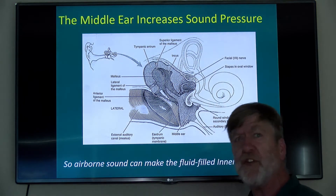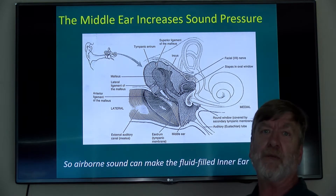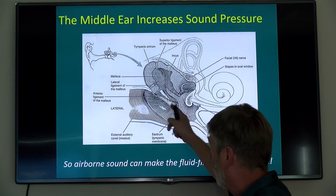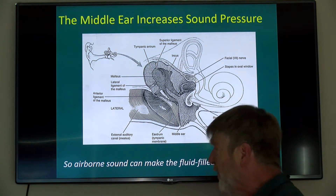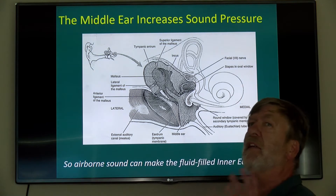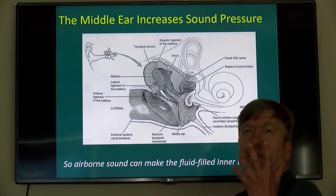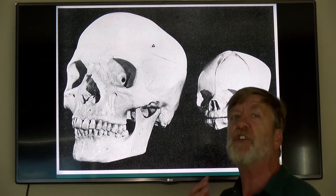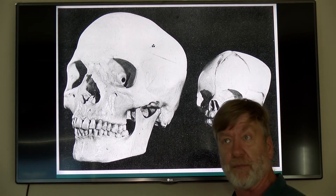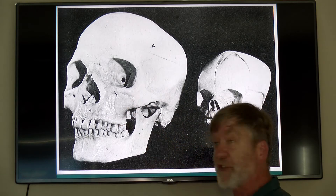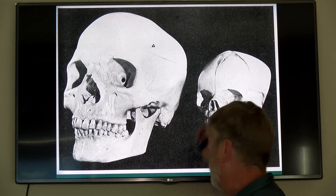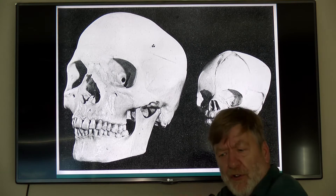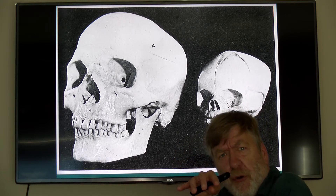The middle ear — causes of middle ear pathology. The middle ear, as you remember, includes the eardrum, the hammer, anvil, and stirrup bones. What's the main middle ear pathology? The main thing that goes wrong with the middle ear is called otitis media. Here's a couple of skulls — you're looking at an adult skull and a baby's skull. The adult skull is longer; the baby's skull is shorter.